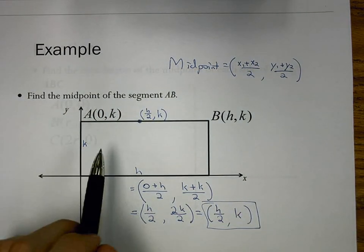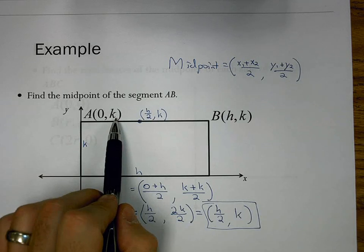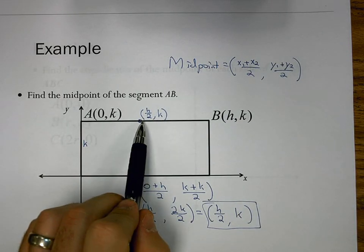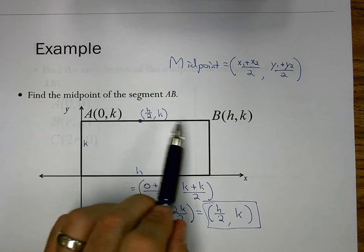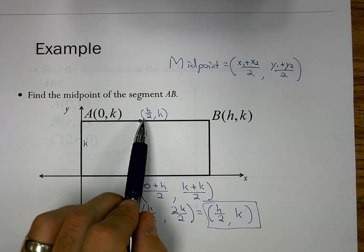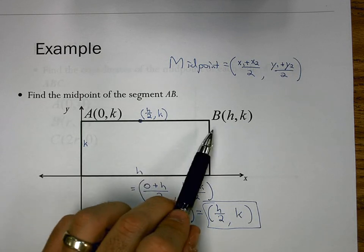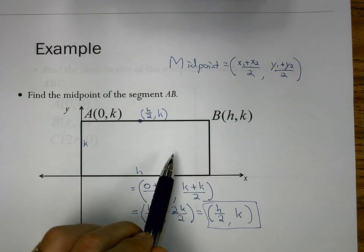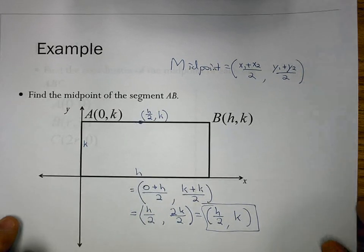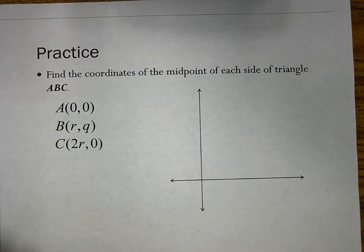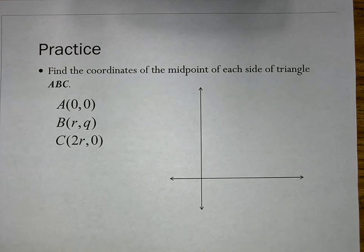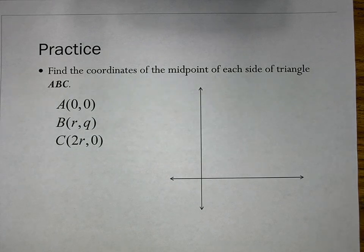Does that make sense? I'm still up K units because my y-value is still K — I still had to go up K. But instead of going from 0 all the way to H, I'm going to go half the distance, and that's what the midpoint is: half the distance along the segment. So my x-coordinate is H over 2. Now you're going to try some on your own — you have your own example for coordinate proof and one for mid-segment. Try those, we'll check our answers, and then do some homework.